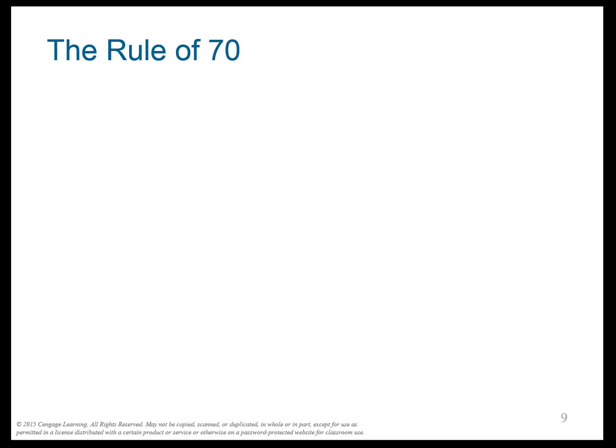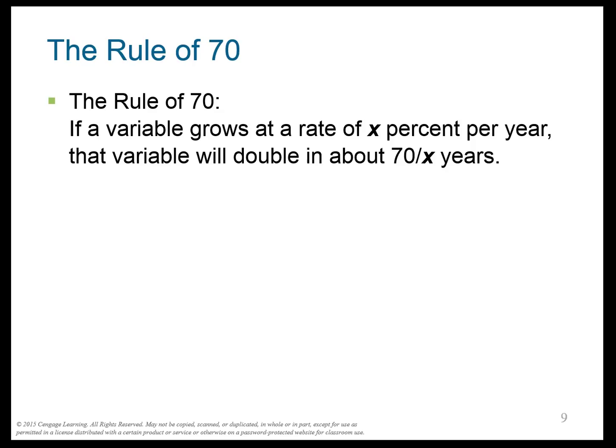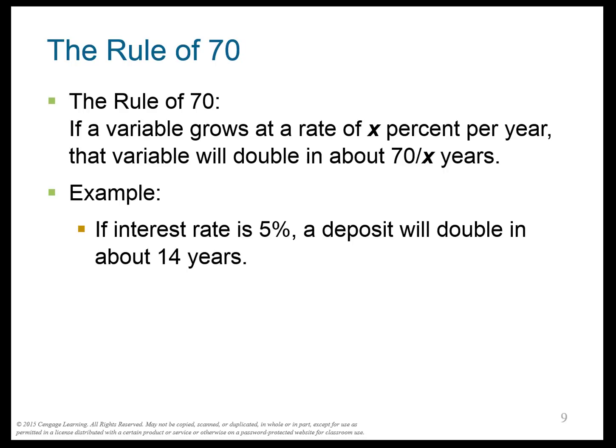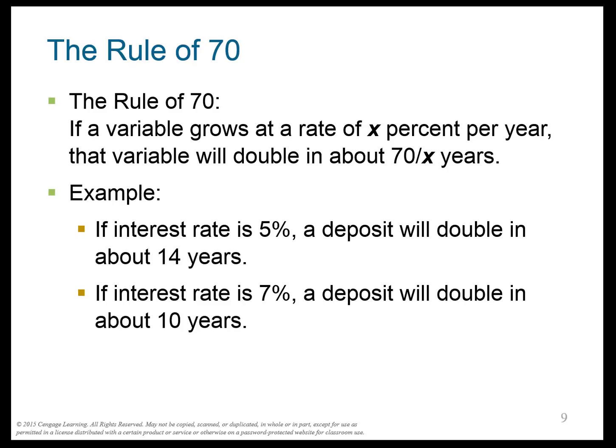There's an easy way to estimate compounding growth, called the Rule of 70: if a variable grows at X percent per year, it will double in 70 divided by X years. At 5%, money doubles in 14 years (70 ÷ 5). Bump that up slightly to 7%, and it doubles in only 10 years. So a small increase in the interest rate — from 5 to 7 — significantly shortens the doubling time.